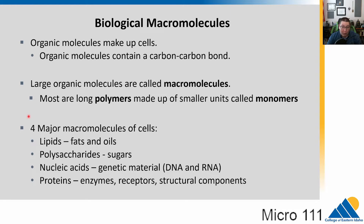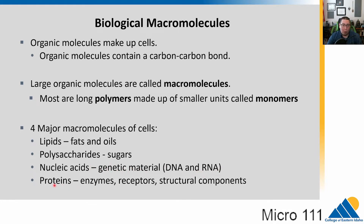The four major classes of macromolecules are: lipids — our fats and oils; polysaccharides, where poly means many and saccharides means sugar — these include things like plant cell walls, not just edible sugars; nucleic acids, my favorite of the macromolecules — DNA and RNA, our genetic materials; and proteins, which include enzymes, cellular receptors, and structural components of the cells.